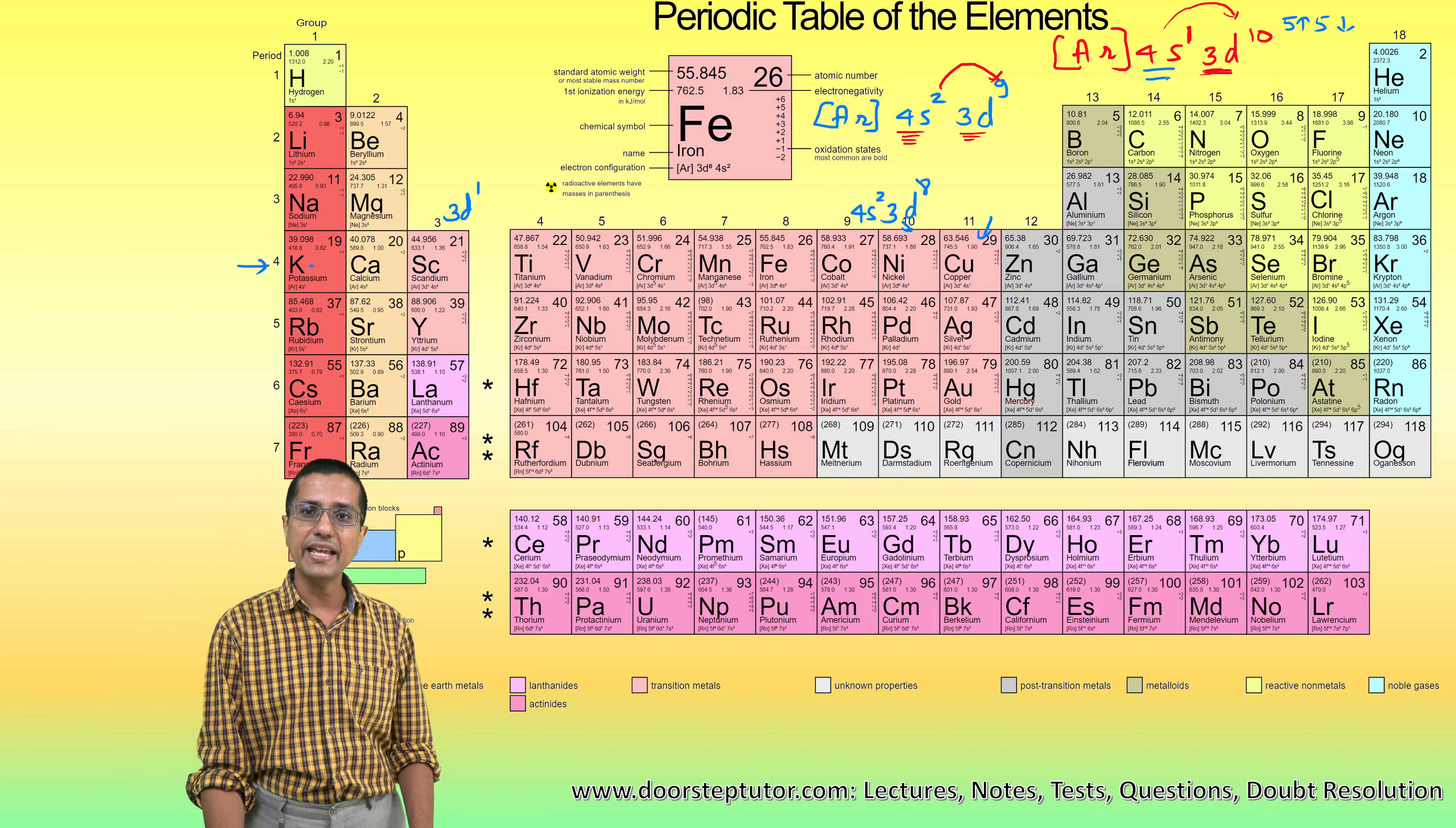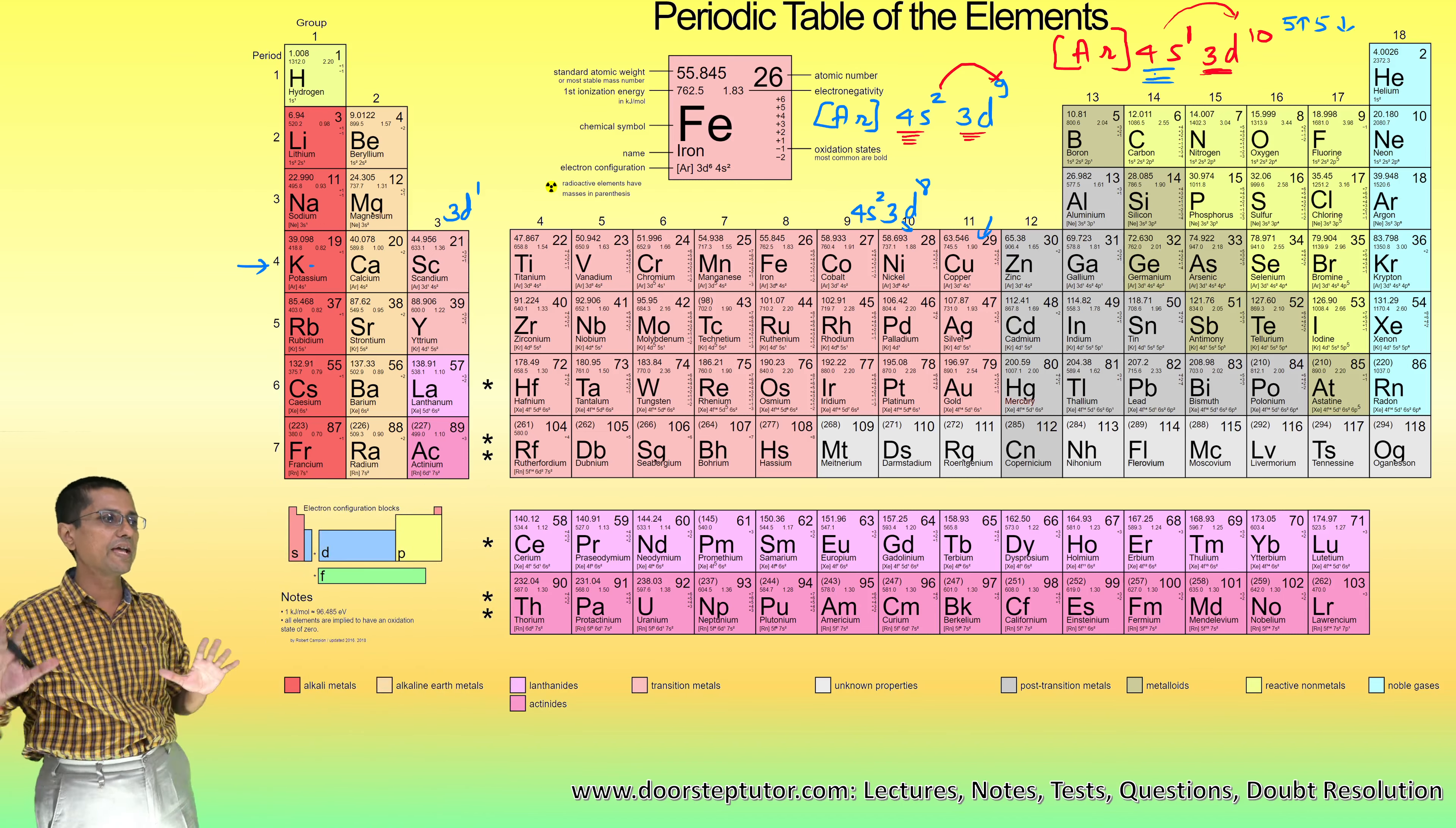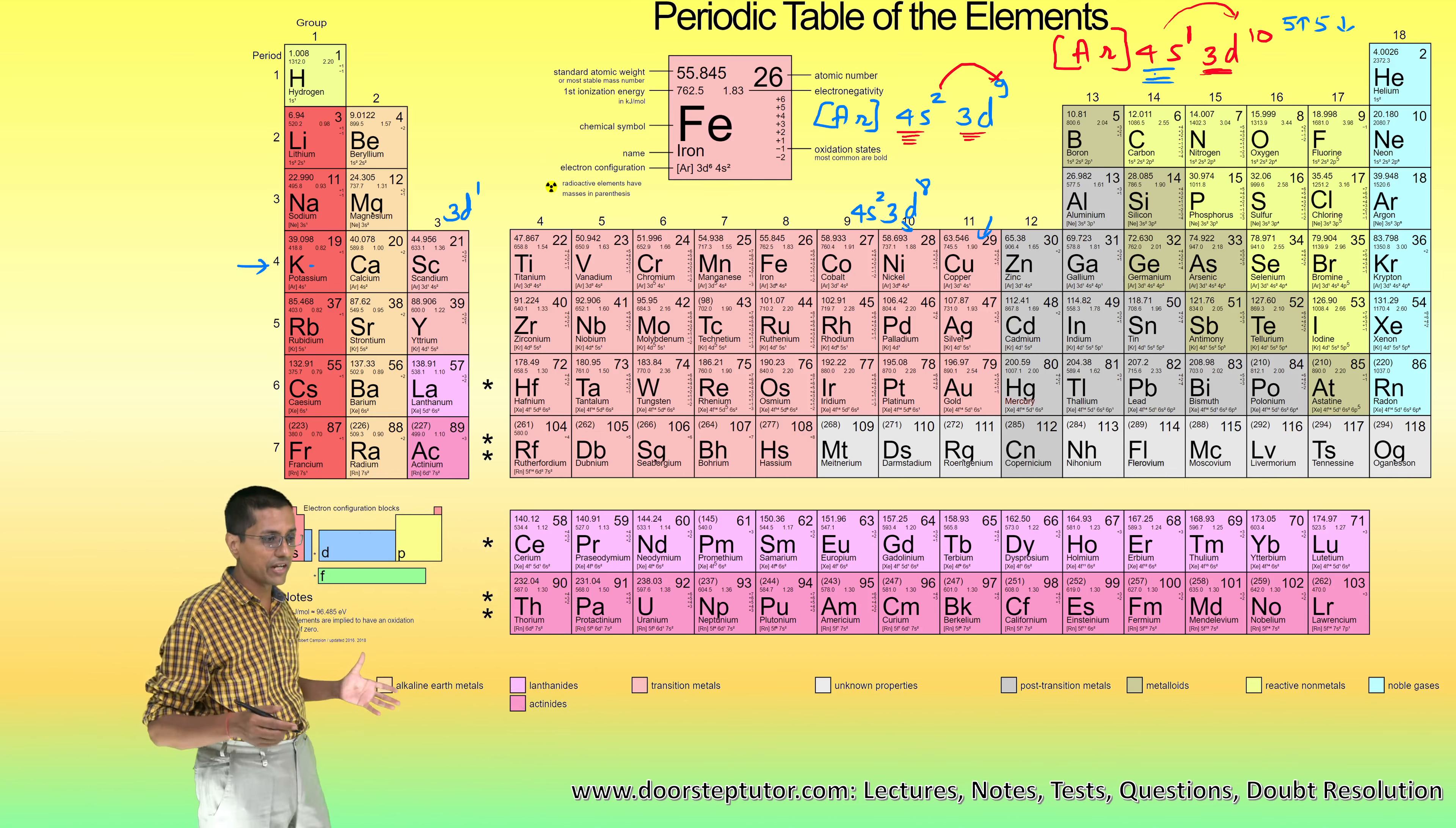In the case of the 4s orbital, because there is only one electron of each spin up and down, there is no reduction due to exchange. Whereas in the case of the 3d orbital, there is a very large reduction due to exchange because you can exchange with five other electrons.